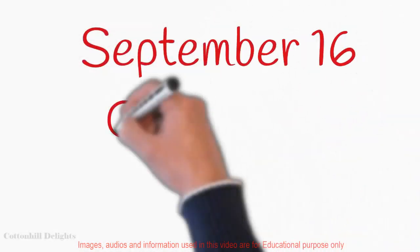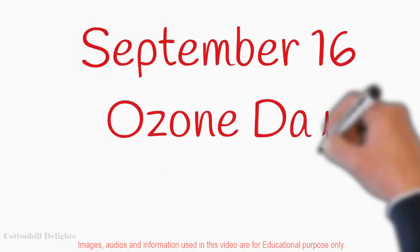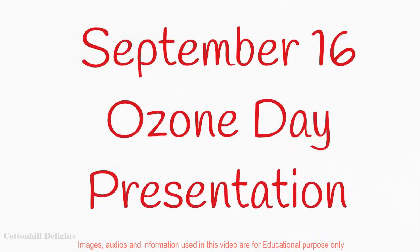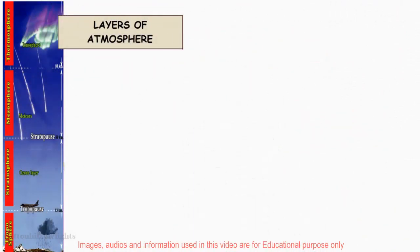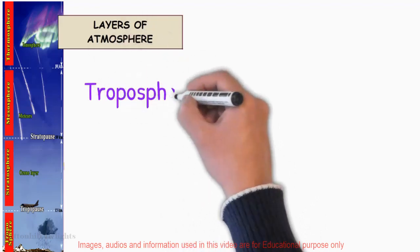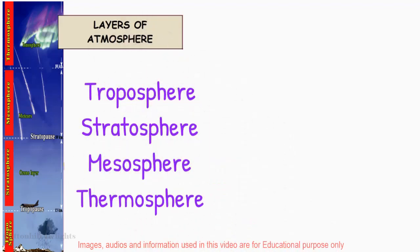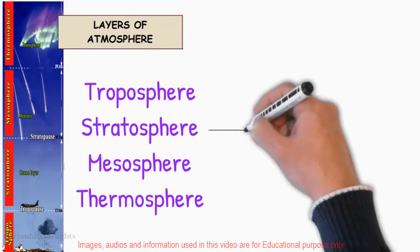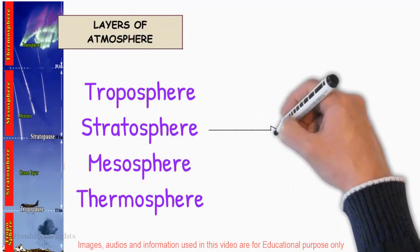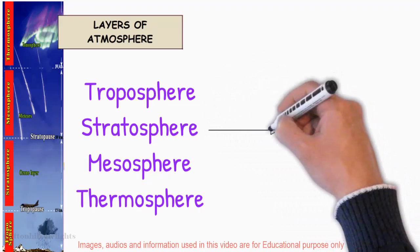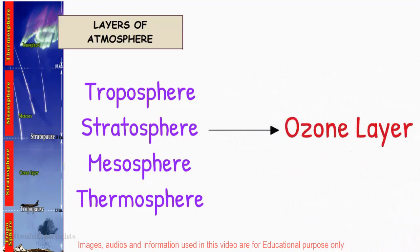Since today is September 16th, Ozone Day, I'm going to present some information. See this picture here — this is the four layers of atmosphere: the troposphere, the stratosphere, the mesosphere, and the thermosphere. We are just going to discuss about the ozone layer in the stratosphere.